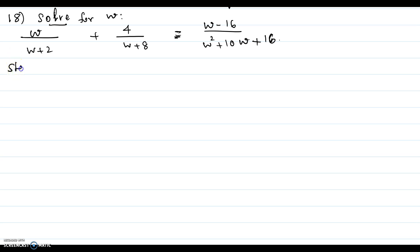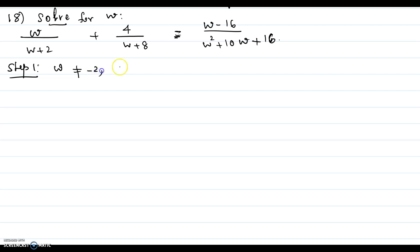First, you note the denominators and find out what are the two values of w which are not solutions to the problem. In this denominator for the first term, you notice w cannot be equal to negative 2, because if you plug in negative 2 for w the denominator becomes 0, and you cannot divide any number by 0 — it becomes undefined. Same way, w cannot be equal to negative 8.